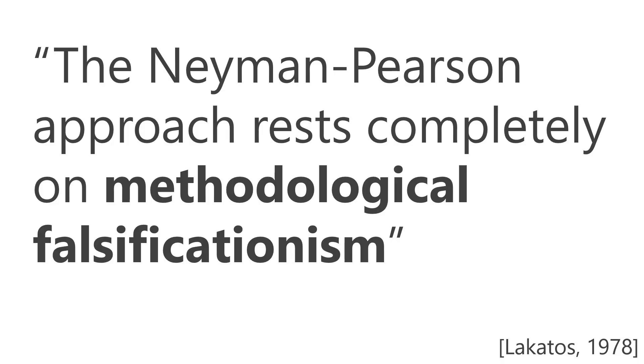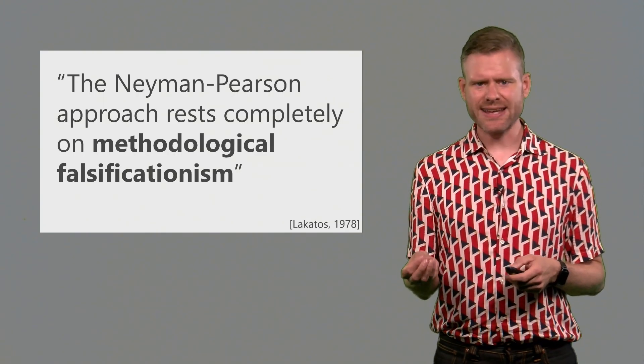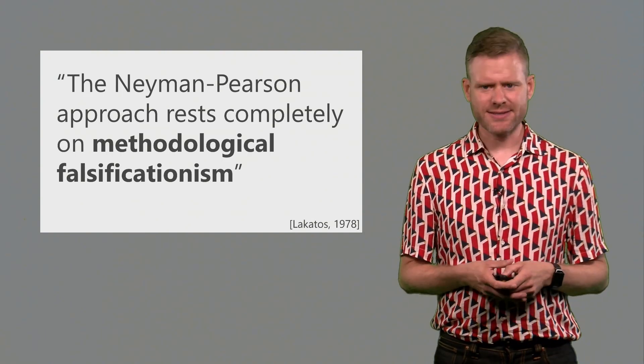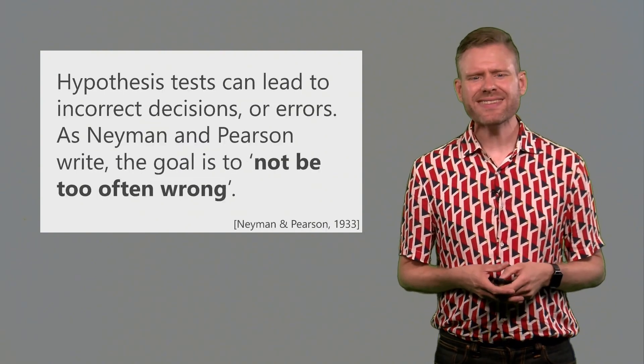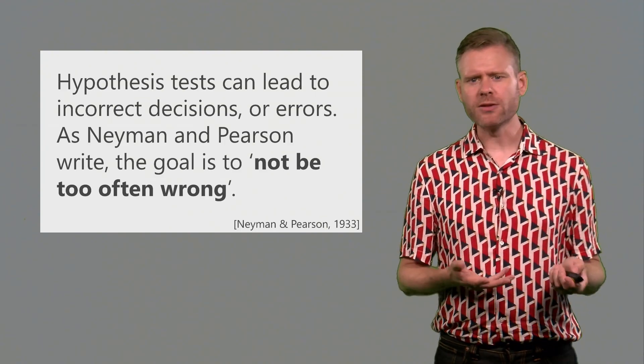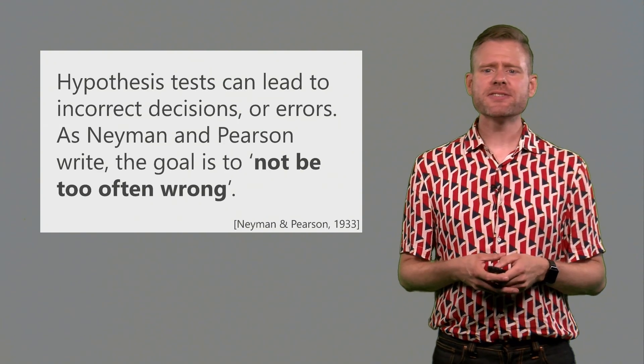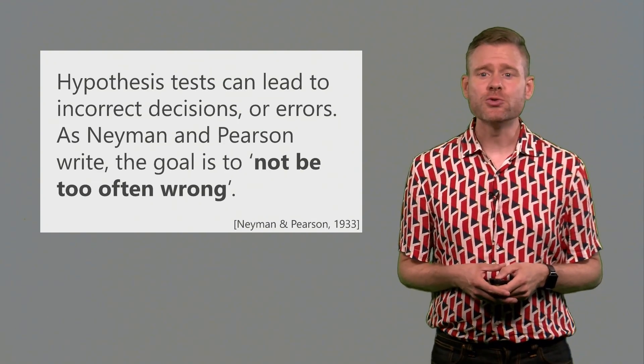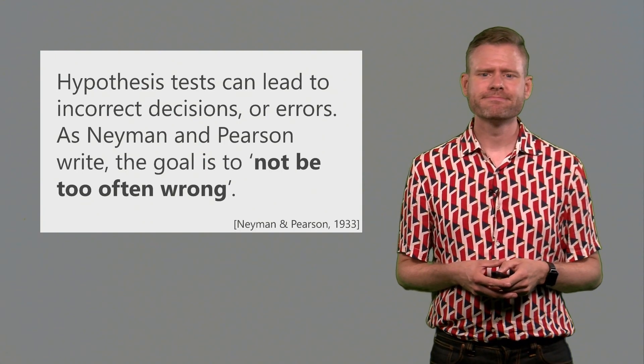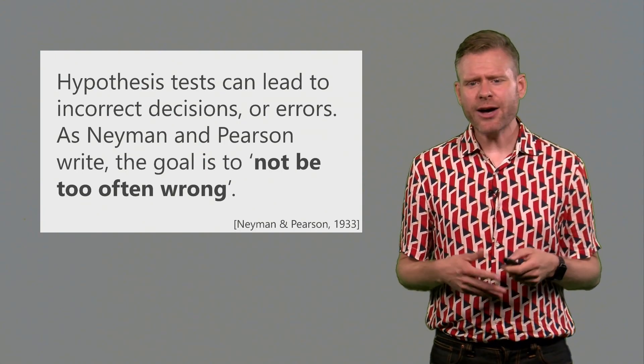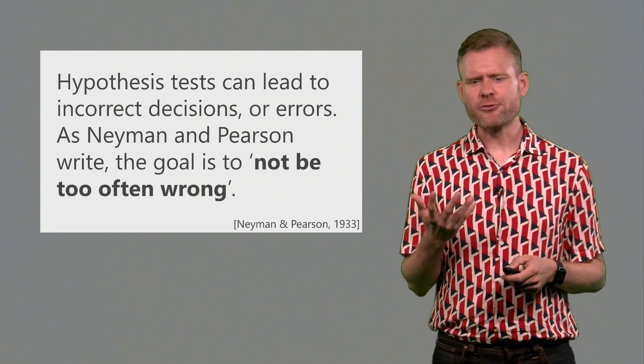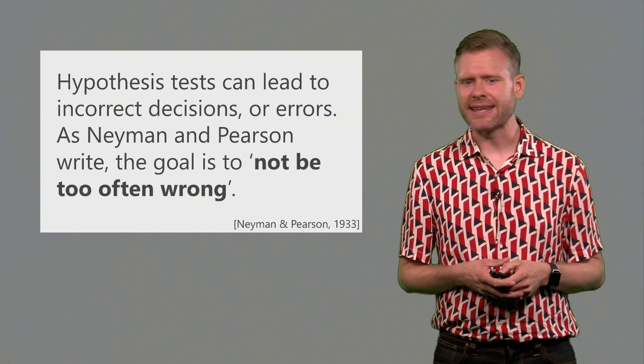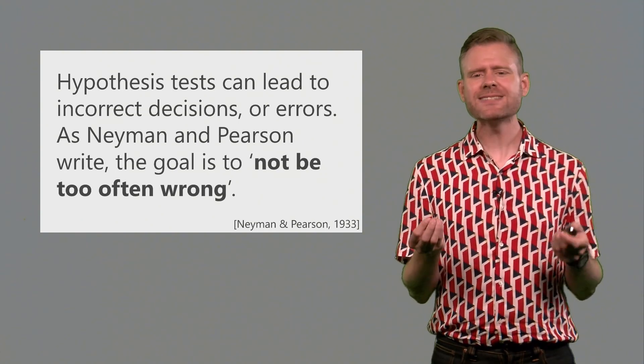Lakatos also writes that the Neyman-Pearson approach to hypothesis testing rests completely on methodological falsificationism. It's good to remember that there's a difference between a Fisherian significance test and a Neyman-Pearson hypothesis test. The goal of the latter is to prevent incorrect decisions or type 1 and type 2 errors. As Neyman and Pearson themselves write, the goal of their approach is to not be too often wrong. It's interesting to think back about how these people wrote about statistics. And if you never read their original work, I can highly recommend it. Some of the statements that they write about are basically poetry.